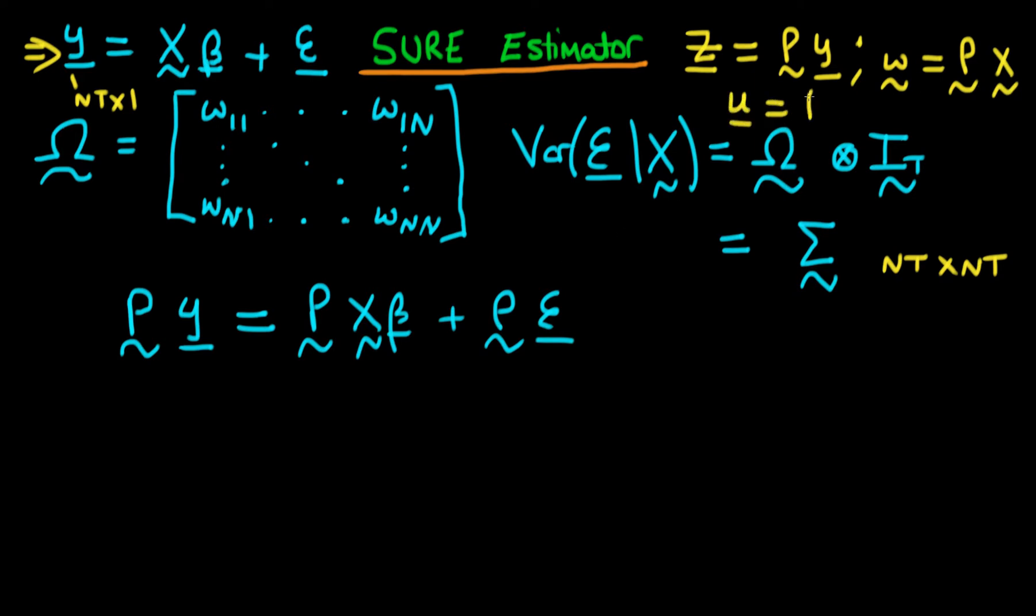This means that we can translate our system into much simpler form, which is Z is equal to omega times beta plus U.